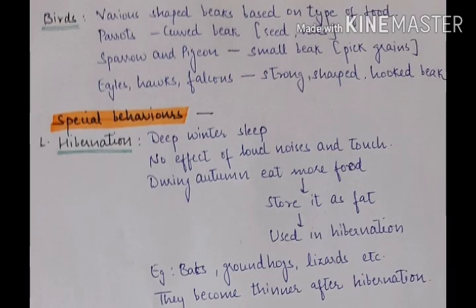Now let's move to birds. You must have seen various kinds of birds. One thing you must have noticed is the various shapes and sizes of beaks — the shape is acquired based on the type of food they eat. For example, parrots have a curved beak because they need to tear or break apart seeds and nuts. Sparrows and pigeons have small beaks because they need to pick up grains from the surface, so they don't need a large beak.